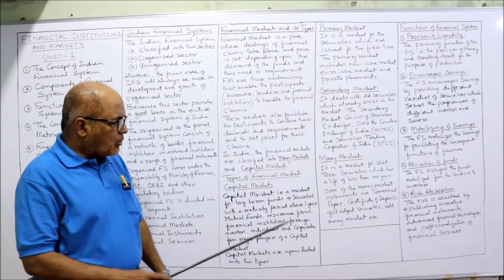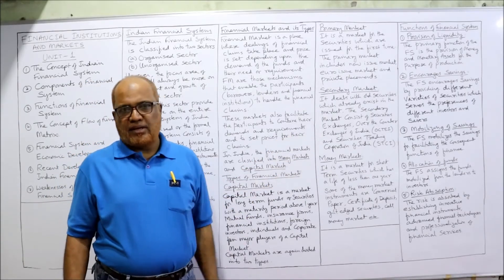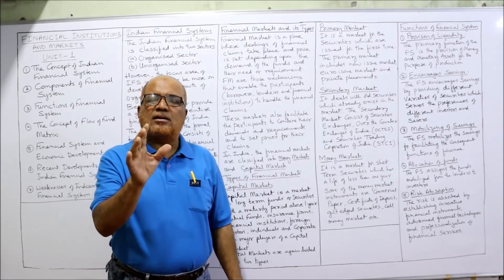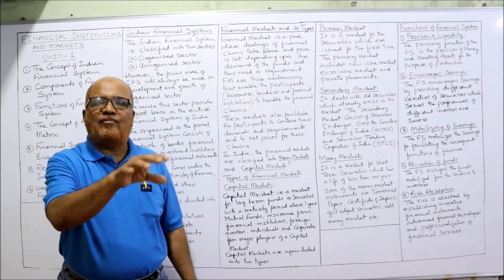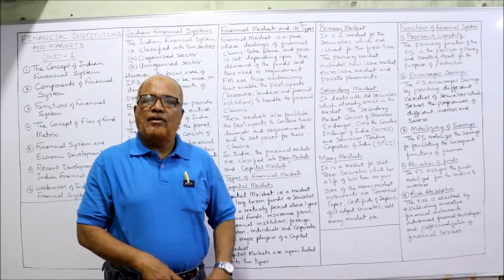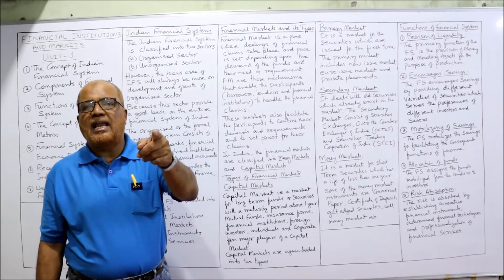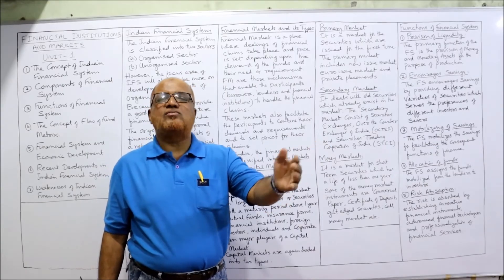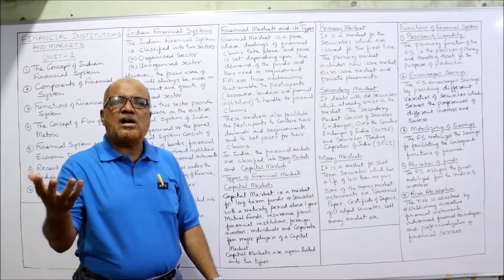Now, the money market. The financial market consists of two types: capital market and money market. Capital market is a long-term funds market; money market is a short-term funds market where borrowers and lenders borrow and lend for a short period — meaning less than one year. The investor will invest for less than one year, and borrowers will also borrow for less than one year in the money market.